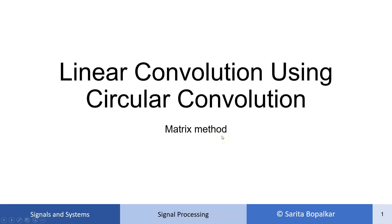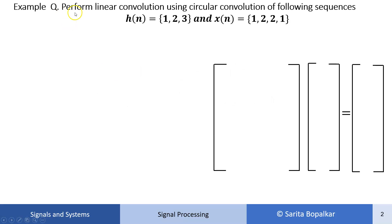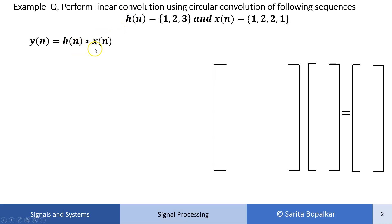Now let's see how we can do this linear convolution by using circular convolution. The example is: perform linear convolution using circular convolution of the following sequences. The impulse response h[n] has samples {1, 2, 3} and the input x[n] has samples {1, 2, 2, 1}. We want to perform linear convolution y[n] = h[n] * x[n], but achieve it through circular convolution of these two sequences.